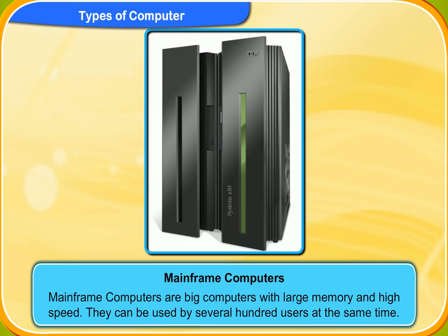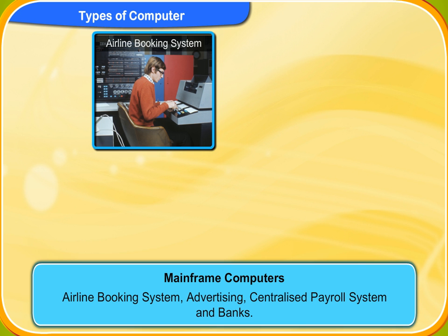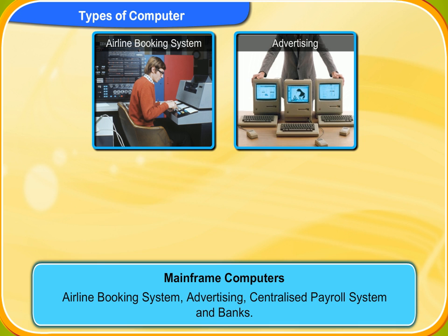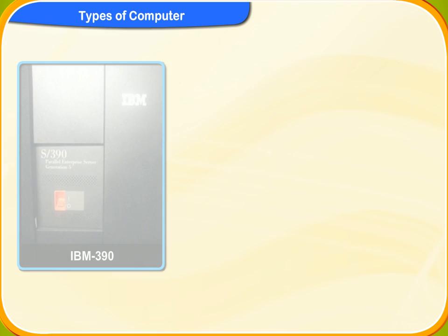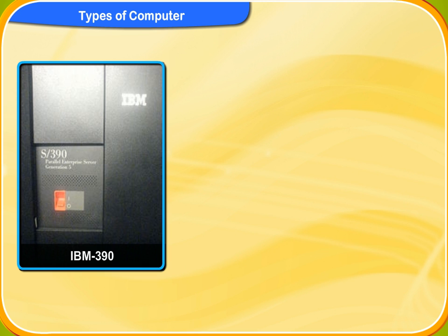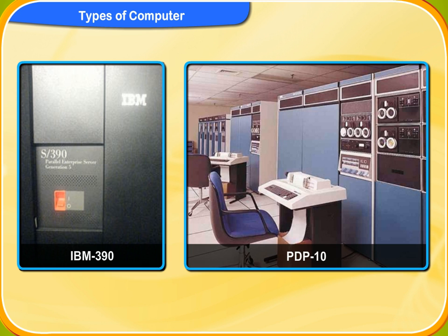Mainframe computers are big computers with large memory and high speed. They can be used by several hundred users at the same time. Mainframe computers are mostly used by big organizations like airline booking systems, advertising, centralized payroll systems, and banks. IBM 390 and PDP-10 are examples of mainframe computers.